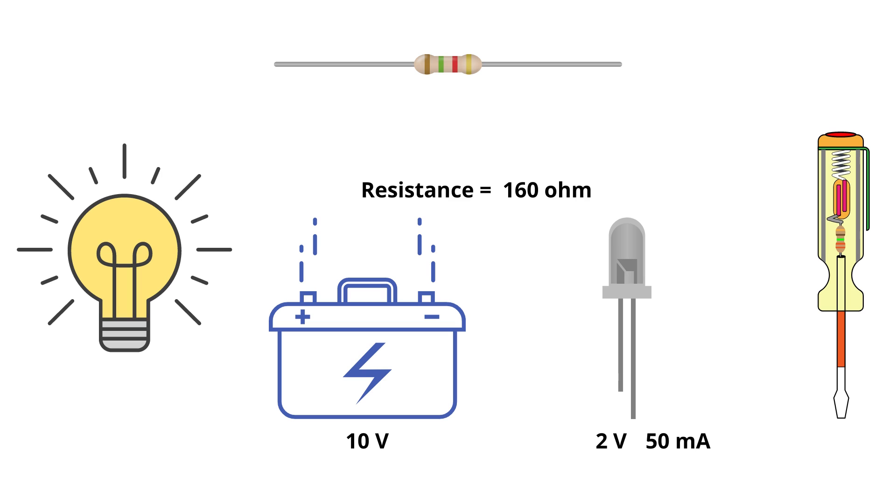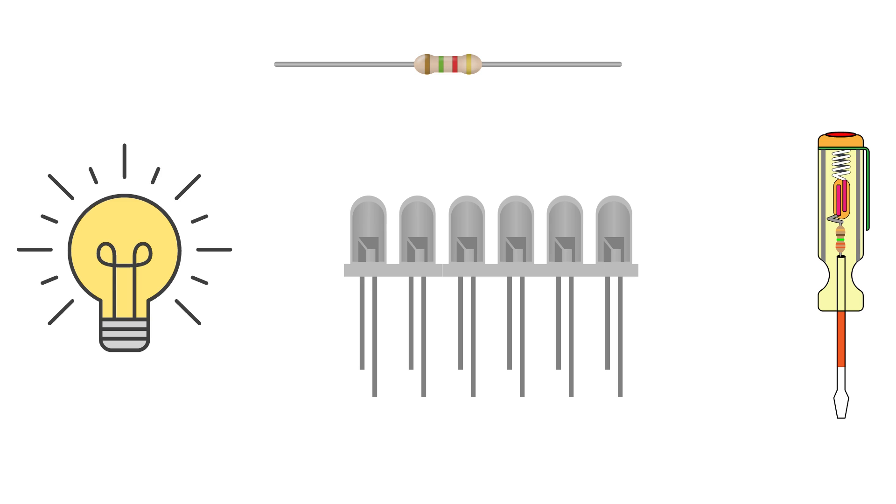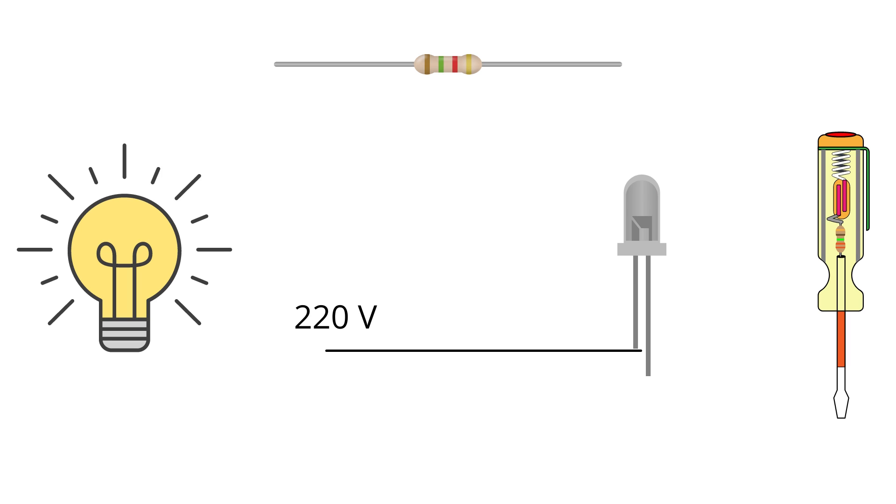Another example where we see the use of this application is when we light a string of LEDs together for some occasion. Like the previous example, if we took a single LED and gave it a supply of 220 volts, then the LED would eventually get damaged.